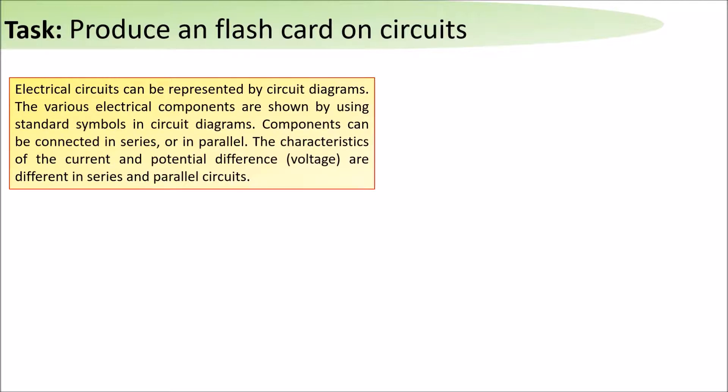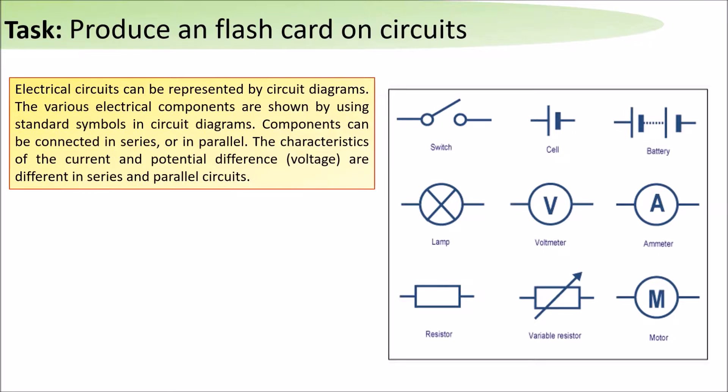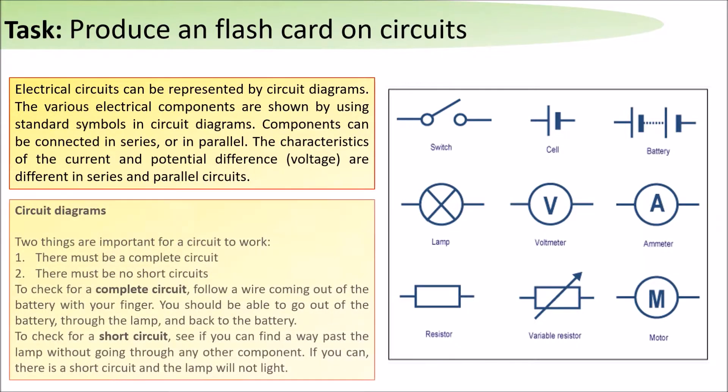Some of the symbols that can be used are shown on the diagram on the right-hand side. In circuit diagrams, there are two things that are important for a circuit to work: there must be a complete circuit, and there must be no short circuits.